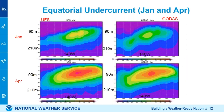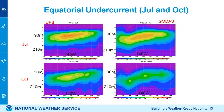Next come the undercurrents. For January and April, you can see around the 100-meter depth there is a stronger ocean undercurrent. Comparing UFS on the left with CODAS observations on the right, you can see the similarity of the strength of these undercurrents in the April case. In July and October, you can see in the October case these undercurrents start to weaken.